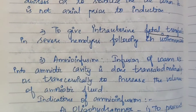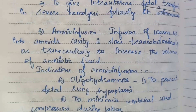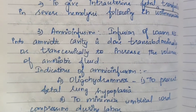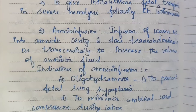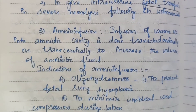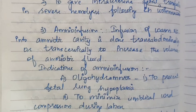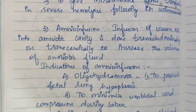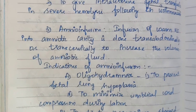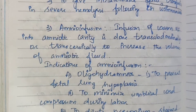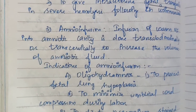Amnio infusion — infusion of warm normal saline into the amniotic cavity — is done transabdominally or transcervically to increase the volume of amniotic fluid in cases of oligohydramnios.